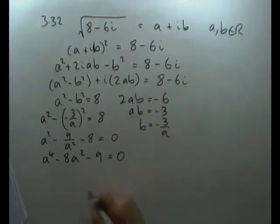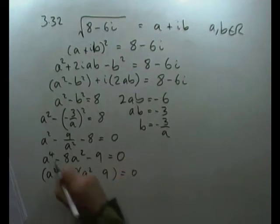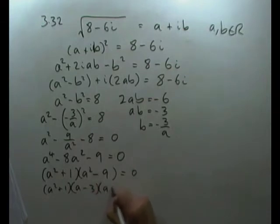A quadratic in a² and a constant. This factors as (a² - 9)(a² + 1) = 0. The second part won't factorize to real roots, but the first gives (a - 3)(a + 3) = 0, which means a = ±3.